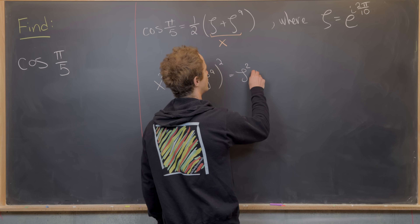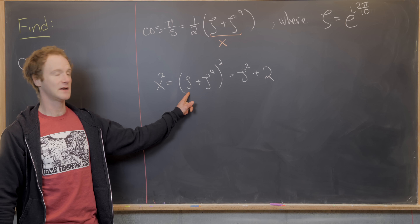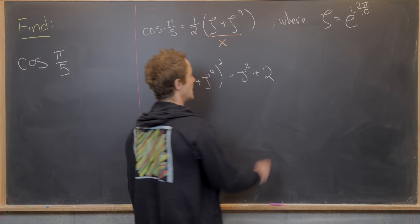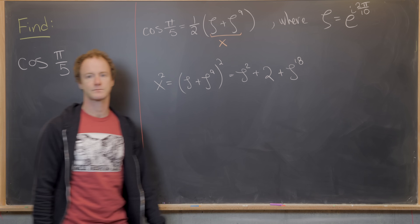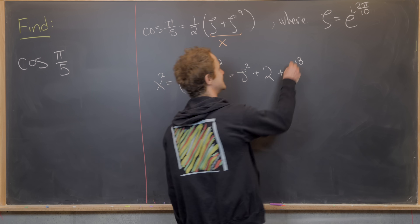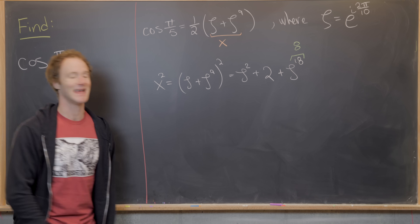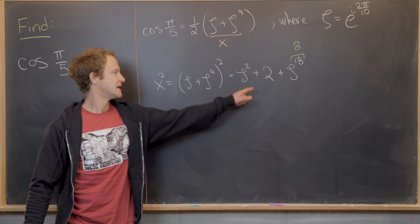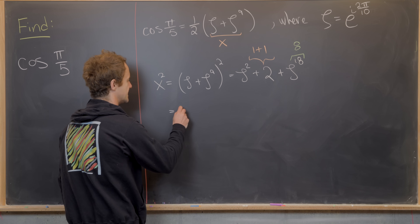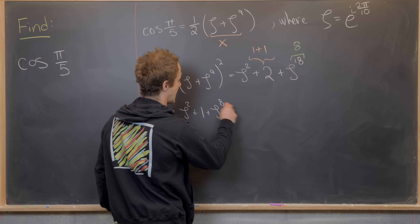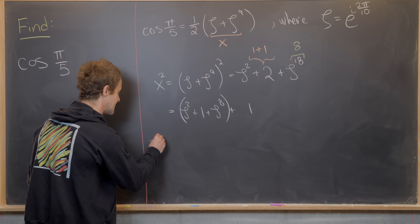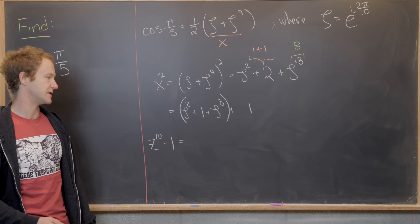Expanding: x² = ζ² + 2·ζ¹⁰ + ζ¹⁸. Since ζ is a 10th root of unity, ζ¹⁰ = 1, so the middle term is just 2. And ζ¹⁸ = ζ⁸ (since ζ¹⁰ = 1). We separate the 2 into 1 + 1 and reorder to get x² = (ζ² + 1) + (ζ⁸ + 1). Next, we use the factorization of z¹⁰ - 1 in terms of its roots of unity.